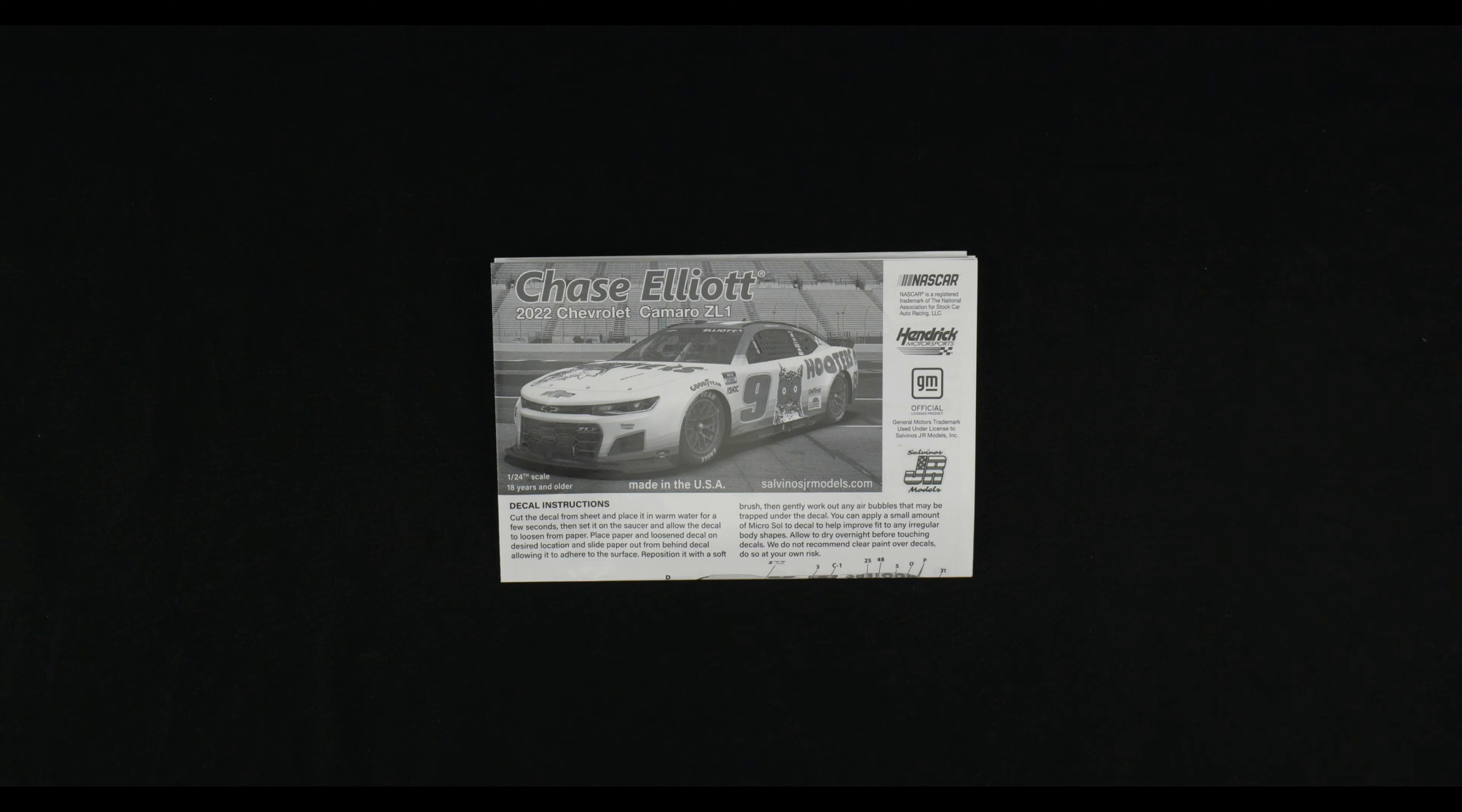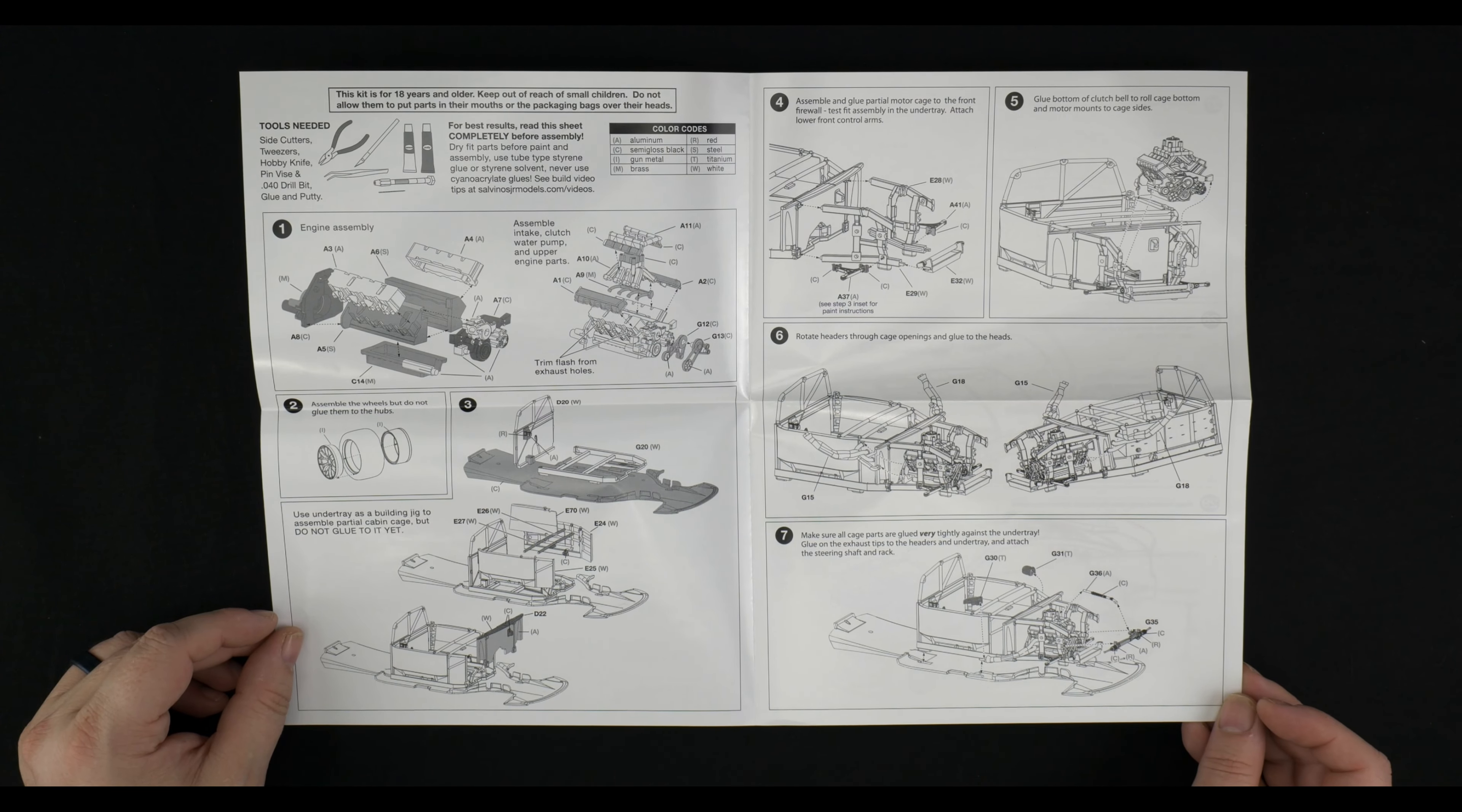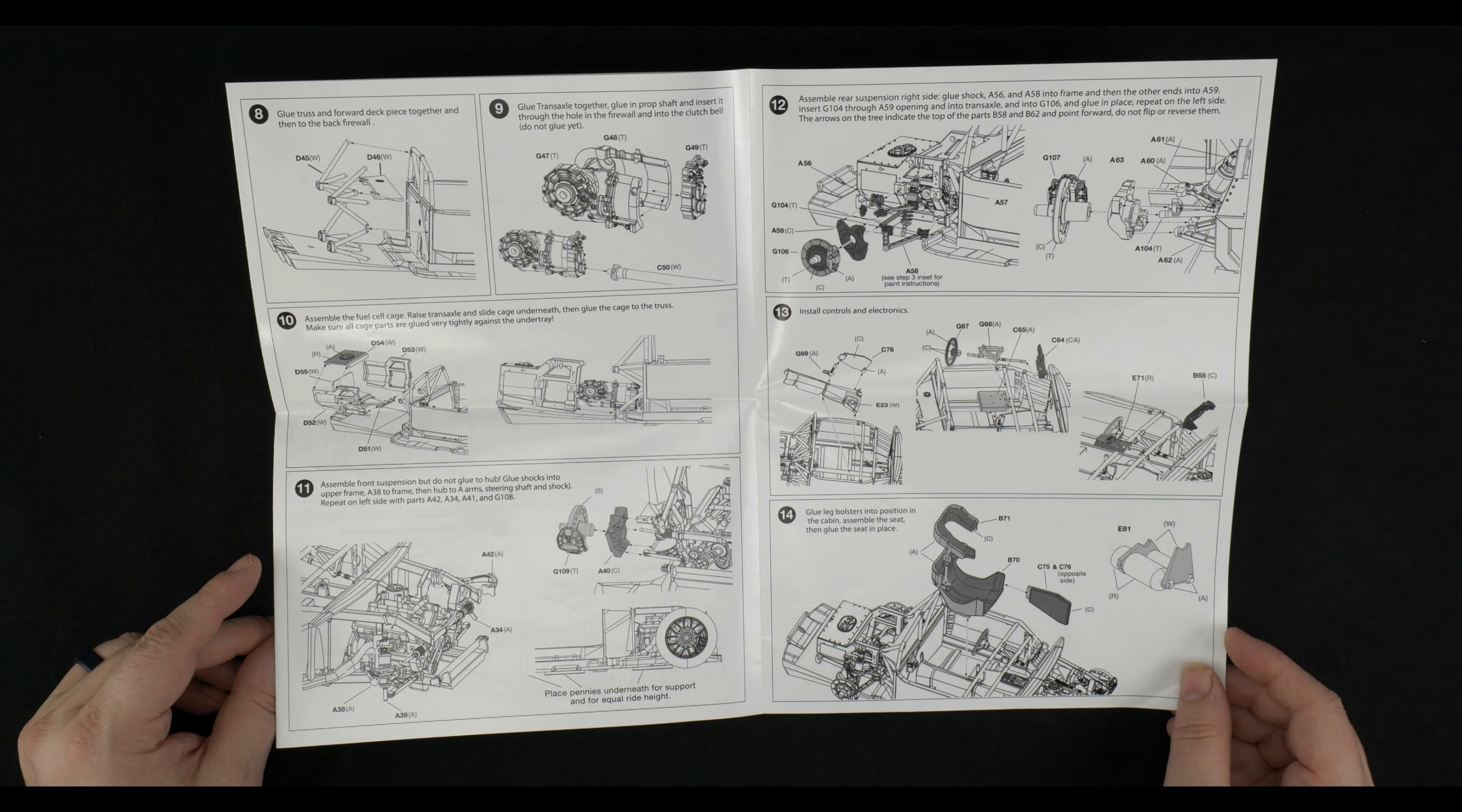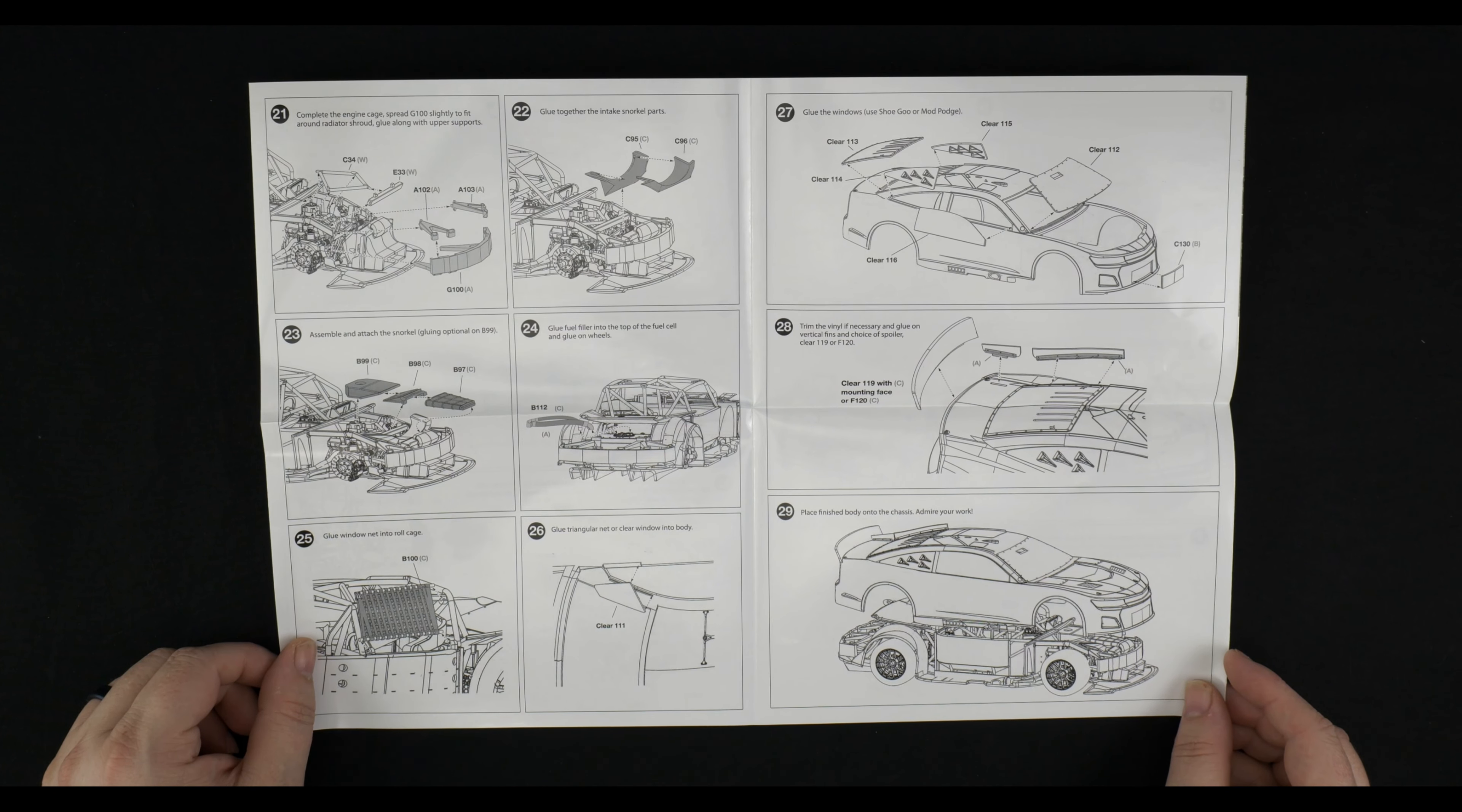So that my friends is going to do it for this look at the Chase Elliott Hooters 2022 Chevrolet Camaro ZL1 NASCAR Next Gen kit from Salvinos JR Models. Don't forget you can get yourself some color matched paint for the NASCAR kits from Salvinos JR Models from Jameson Scale Finishes. Don't forget to use Pedans 10 to check out and save yourself 10% off your order.